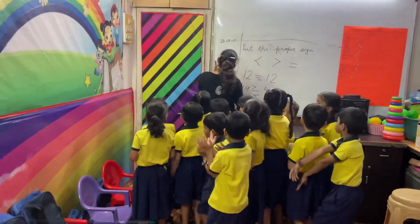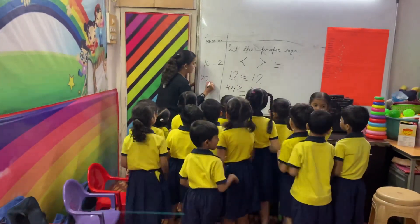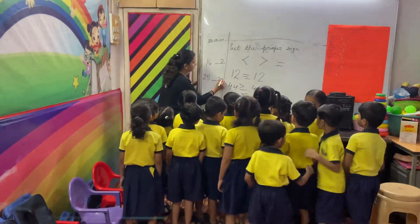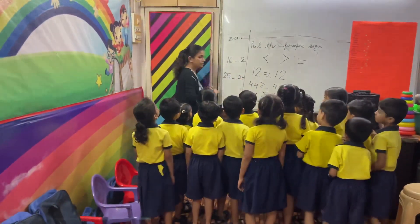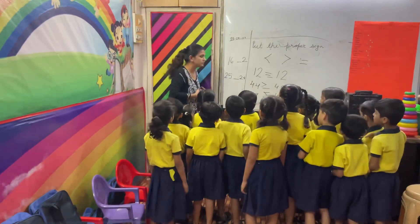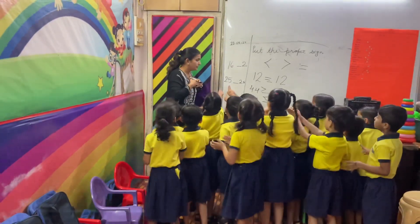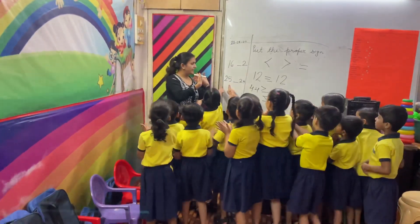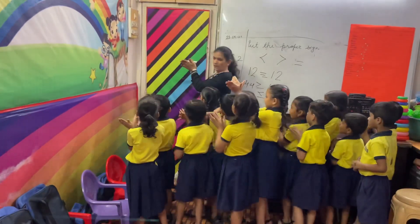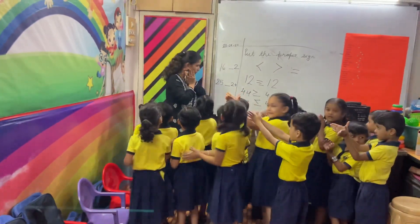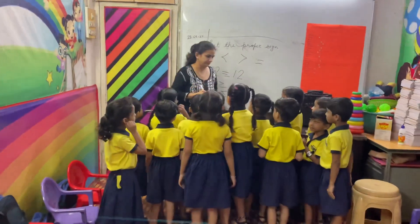And suppose the teacher wrote 25 dash 24. Which side do we open the face? Toward 25 — the 25 side. Right? Understood? Let's do it. Okay, done.